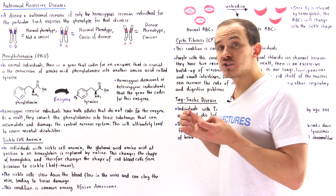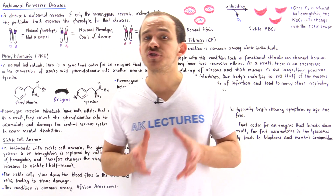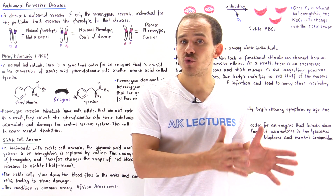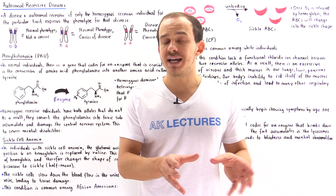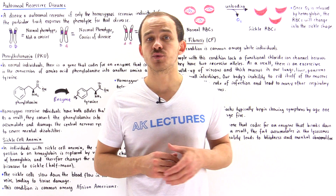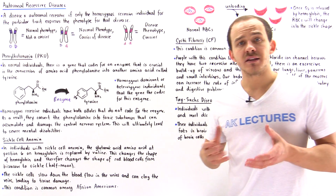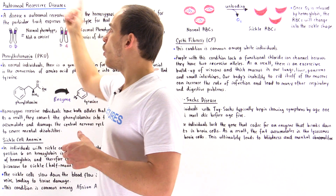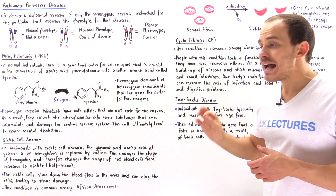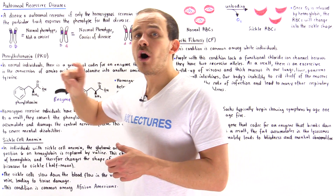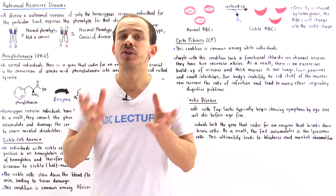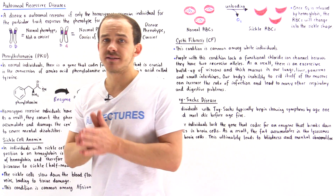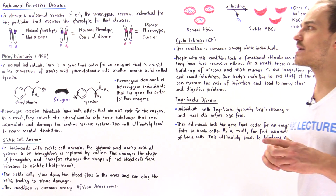Recall that in every single somatic cell of the human body, we have 23 pairs of homologous chromosomes. One of these pairs is known as the sex chromosome — in males we have the X and the Y, and in females we have two X chromosomes. The other 22 pairs of homologous chromosomes are known as autosomes. An autosomal recessive disease means the genetic abnormality exists on one or both of the genes on the autosomal homologous chromosome pair, not on sex chromosomes.